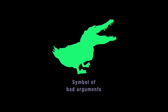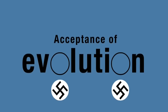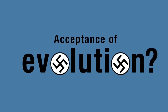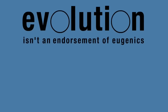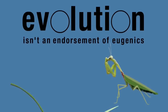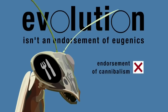Some people feel that an acceptance of evolution implies or leads inevitably towards the desire for supremacist control over the breeding of human beings. But recognising facts about nature doesn't mean you have any wish to apply them to social policy and commit gross violations of human rights. Evolution isn't an endorsement of eugenics, any more than accepting that the females of numerous species kill and eat the males after mating is an endorsement of cannibalism. It's simply a recognition of reality.